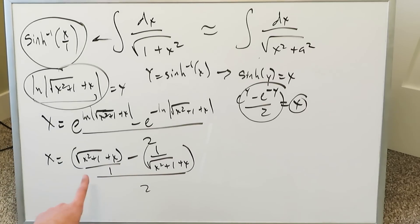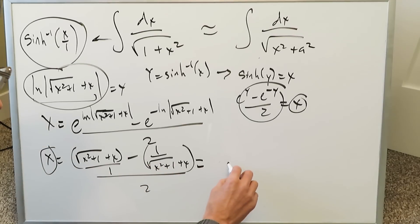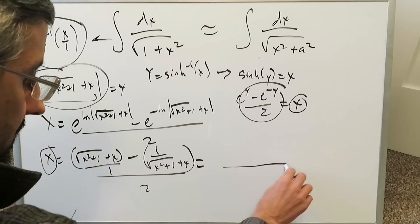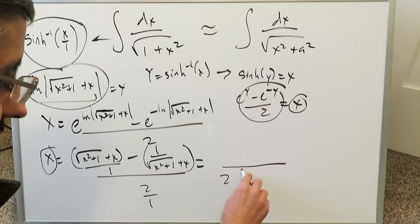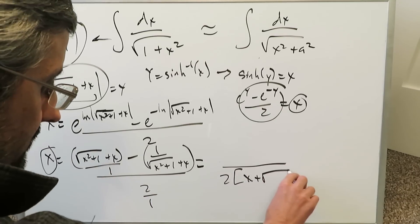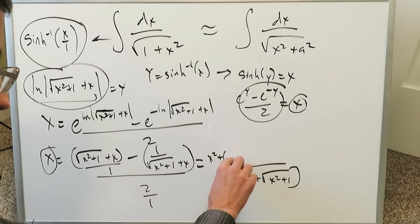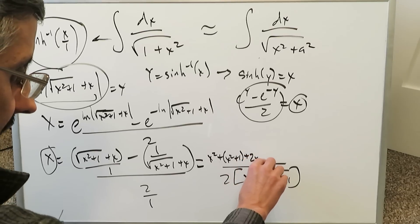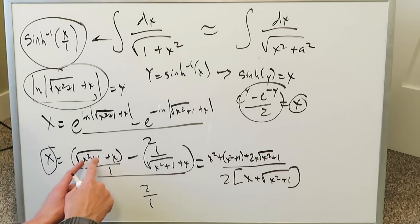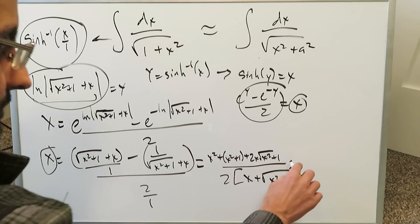By means of this identity right here with the e base, you'll have a 1 over root x squared plus 1 plus x all over 2. You have a common denominator you can bring out. When you do the common denominator and you bring the 2 with it, you know the 2 is a 2 over 1. Your common denominator here is going to be x plus root x squared plus 1. 1 goes in that. You'll have x squared plus x squared plus 1 plus 2x root x squared plus 1. You're just doing a plus b times a plus b. You'll have a squared plus b squared plus 2ab, minus 1.